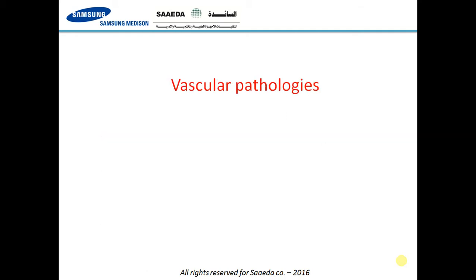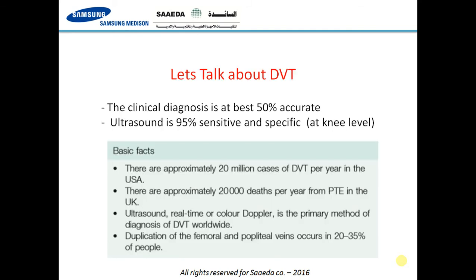First, let's start with vascular pathologies. The most famous vascular pathology causing lower limb swelling and/or pain is by far DVT — deep venous thrombosis. The problem is that clinical diagnosis of DVT is at best only 50% accurate, while ultrasound is 95% sensitive and specific at the knee level and above.